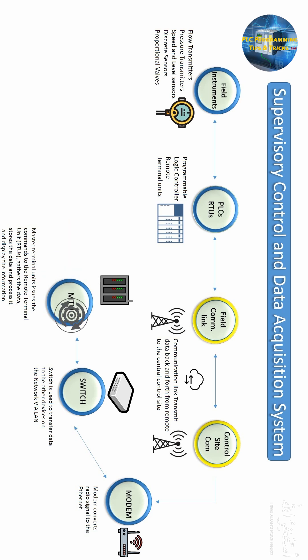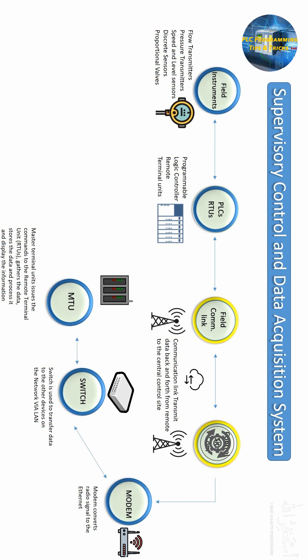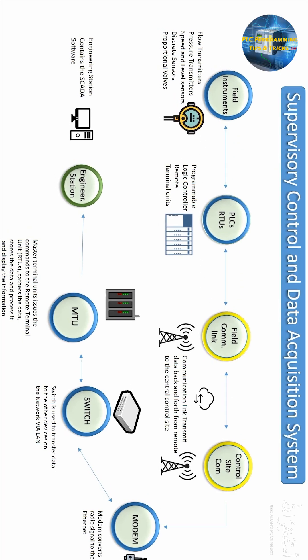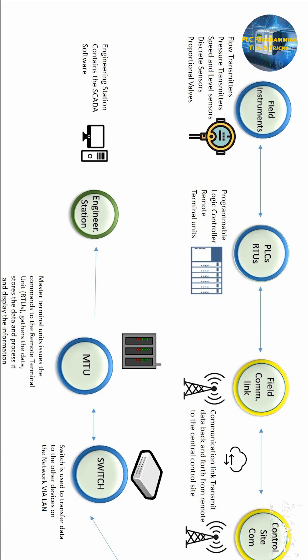The Master Terminal Unit receives data from the RTUs or PLCs, stores this data, analyzes it, and sends control commands back to the RTUs to control the process at the remote location. An engineering station is connected to the MTU, and this engineering station has the SCADA software running on it.